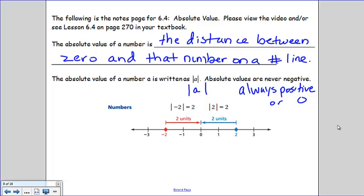Here's an example. The absolute value of negative 2 is 2 because the number negative 2 is 2 units from 0. The absolute value of 2 is also 2 because it's the same distance, 2 units from 0.